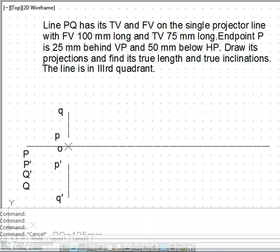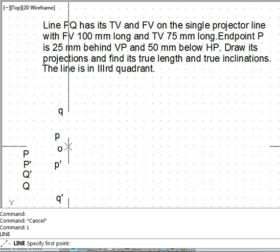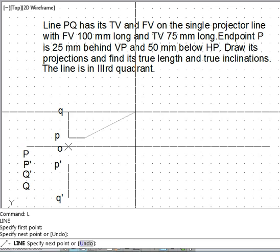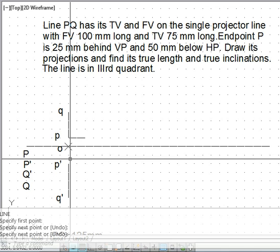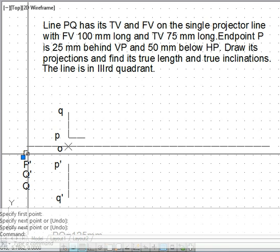Now regarding the procedure of finding the true length, true inclination and also the traces, we find out what is the distance of the particular point P dash from O. That distance is 50 mm. So we draw from P a line equal to O P dash and we name this point as capital P.